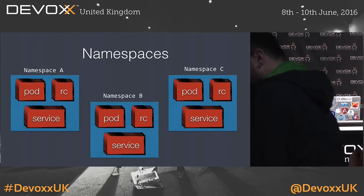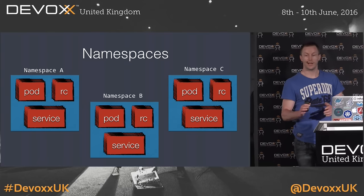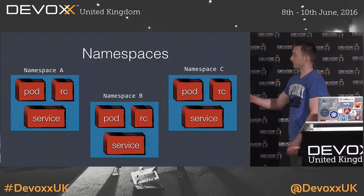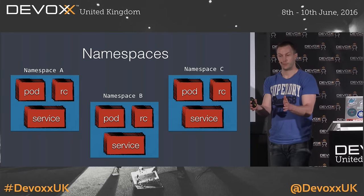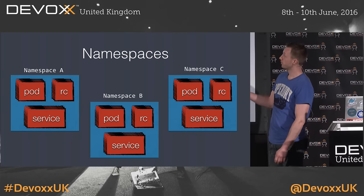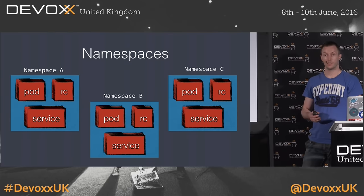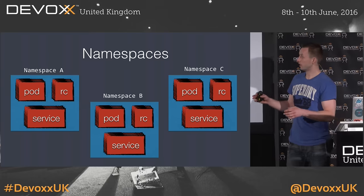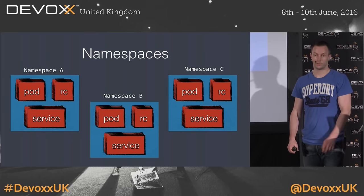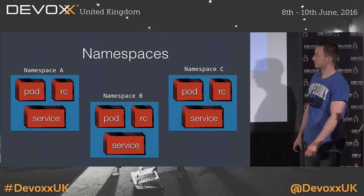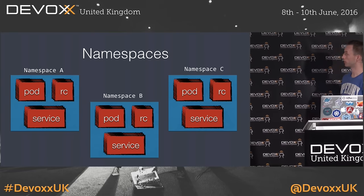The last concept that you have to be familiar with are namespaces. A namespace is an isolated space in Kubernetes where you have your pods, replication controllers, and services. You can have, for example, a test environment in a separate namespace and your production environment in a different namespace, with services of the same name without conflicts. It is very easy to have different environments on the same physical Kubernetes cluster.